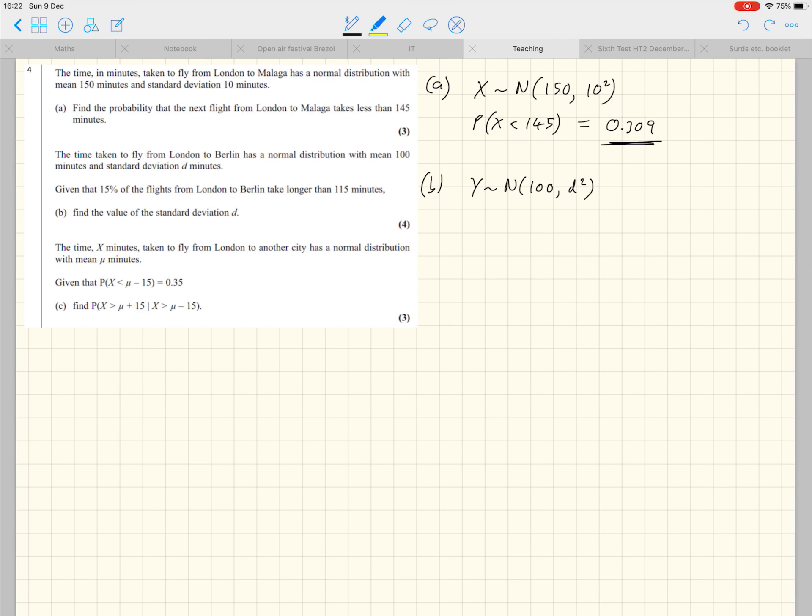This question could just as well have been worded with a sentence starting here. 15% of the flights from London to Berlin take longer than 115 minutes. Full stop. Find the value of the standard deviation d. So the given is, don't get confused and start trying to use A given B like we did in an earlier question. How can we write this as a mathematical sentence? Well, 15% take longer than something. So the probability that the next one takes longer than 115 minutes is 0.15.